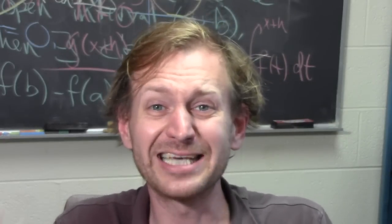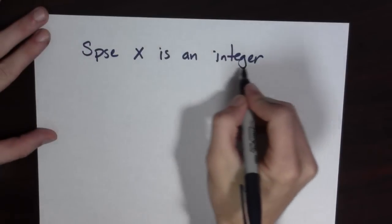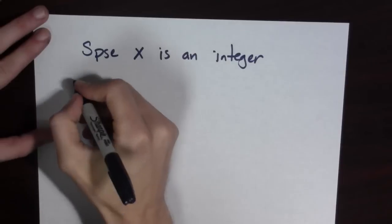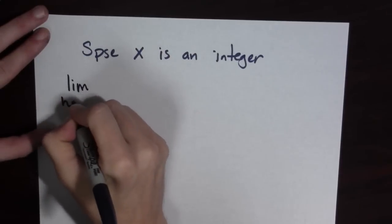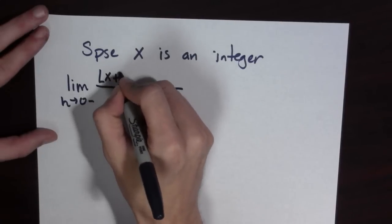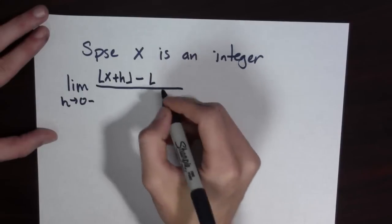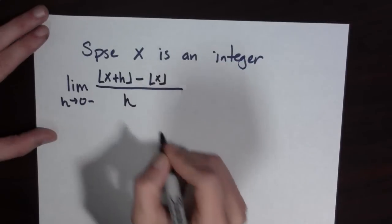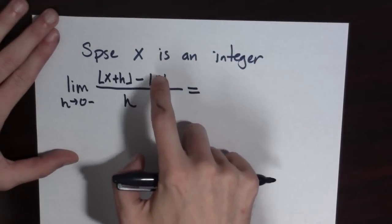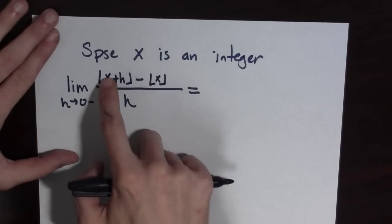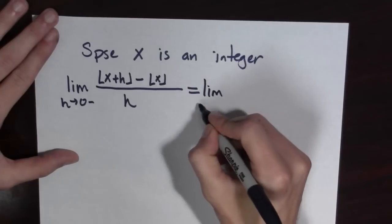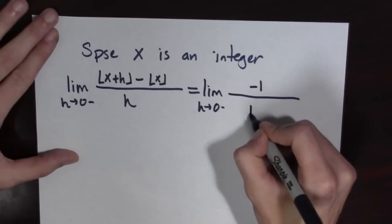But what happens when x is an integer? Now suppose x is an integer. We're going to see what happens when we try to compute the limit that's the definition of the derivative, and we're going to do the limit from the left initially. So we're going to look at the limit as h goes to 0 from the left of the floor of x plus h, minus the greatest integer less than or equal to x, all over h. If x is an integer, then the floor of x is just equal to x, but h is going to 0 from the left, so this is the integer that's 1 less than x. And so this is going to equal the limit as h goes to 0 from the left of negative 1 over h.